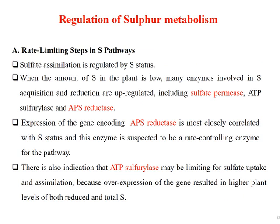Regulation of sulfur metabolism involves rate-limiting steps in sulfur pathways. Sulfate assimilation is regulated by sulfur status: when sulfur levels in the plant are low, many enzymes involved in sulfur acquisition and reduction are upregulated, including sulfate permease, ATP sulfurylase, and APS reductase. Expression of the gene encoding APS reductase is most closely correlated with sulfur status, making it the suspected rate-controlling enzyme. There is also indication that ATP sulfurylase may be limiting, as overexpression of its gene resulted in higher plant levels of both reduced and total sulfur.